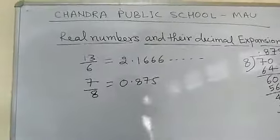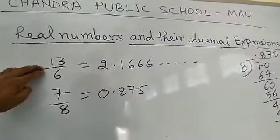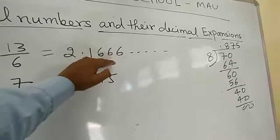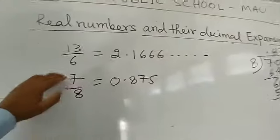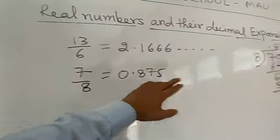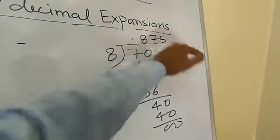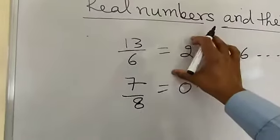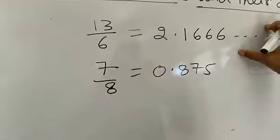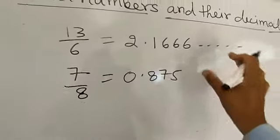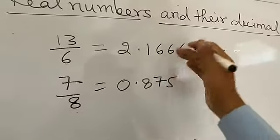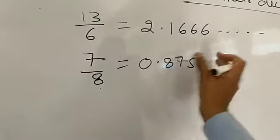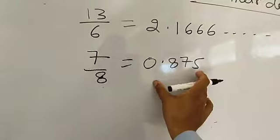From these two examples I get two kinds of rational numbers. In the first case, the decimal is not going to be terminated — you never get remainder 0 at any step. But in the second case, after a certain step you get remainder 0. So the first is called a non-terminating decimal and the second is called a terminating decimal.